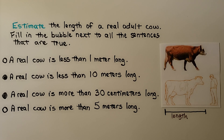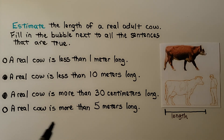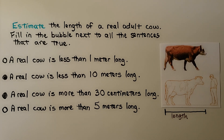What about: a real cow is more than 5 meters long? Do you remember my long yellow meter stick? Do you think a real cow is more than 5 of those? If you said no, you're right — that would be a very, very long cow. So a real cow is less than 10 meters and more than 30 centimeters long.